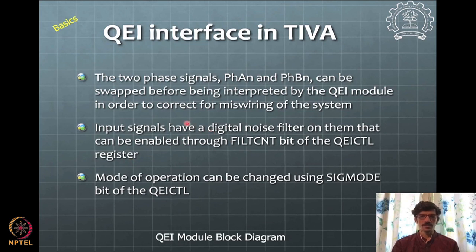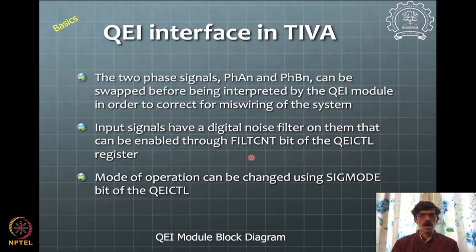As with PWM, there are two philosophies for programming the QEI interface: register-based programming — understanding and directly writing to hardware registers — and using API libraries provided by the manufacturer. Both approaches are valid; we will look at both for the quadrature encoder interface today.